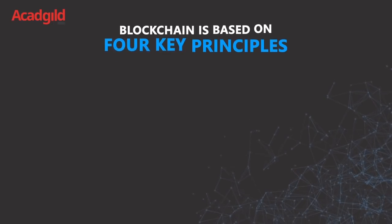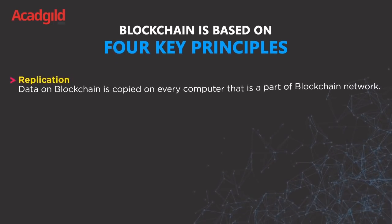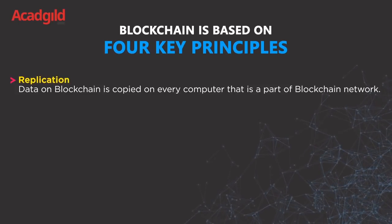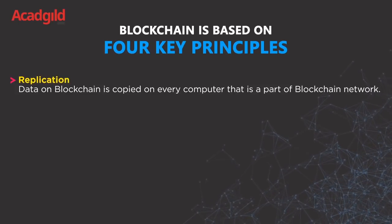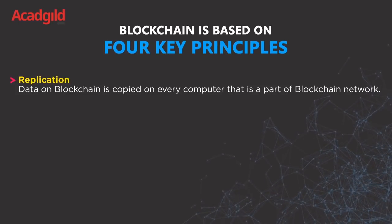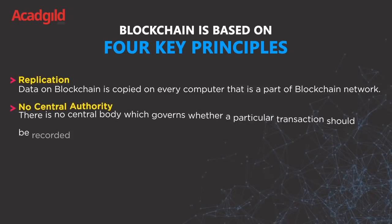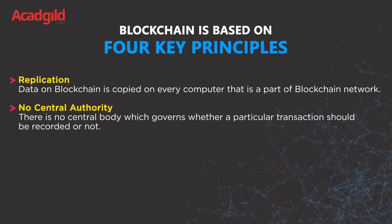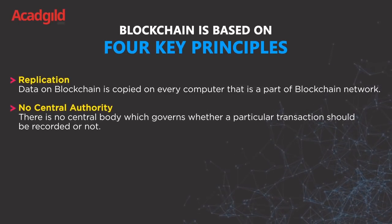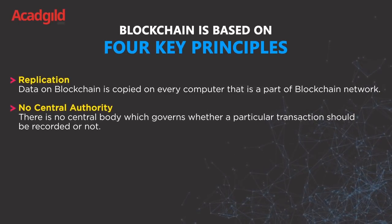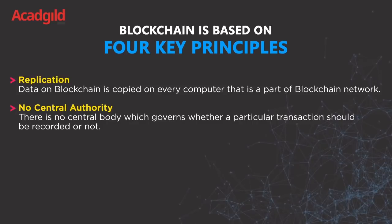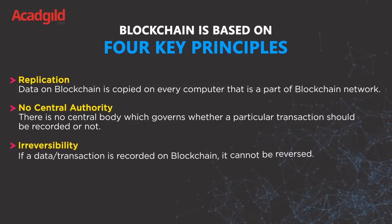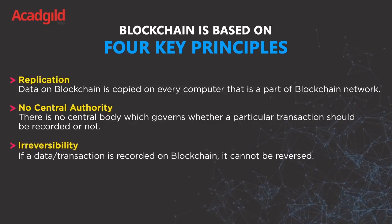The first is Replication — data on the blockchain is copied on every computer that is a part of the blockchain network. The second is No Central Authority — there is no central body which governs whether a particular transaction should be recorded or not.